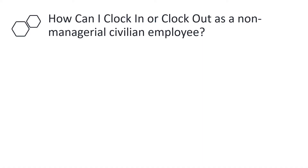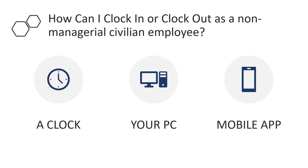Now I'd like to walk through a few of the most common questions we've received during our testing phase. How can I clock in or clock out as a non-managerial civilian employee? Non-managerial and non-confidential employees are required to clock in at the start of your day and out at the end of your day. You can clock in or out in three places: the time clocks throughout the offices using biometrics, your state-issued laptop or computer, or by downloading the Kronos app on your phone and using the punch option.